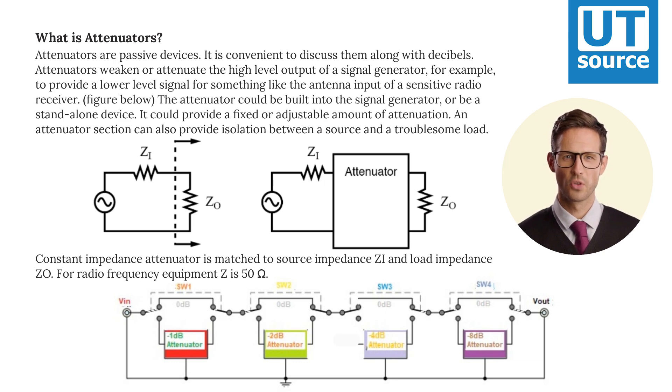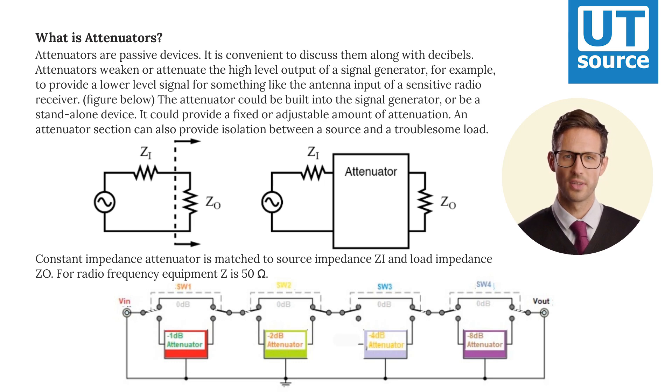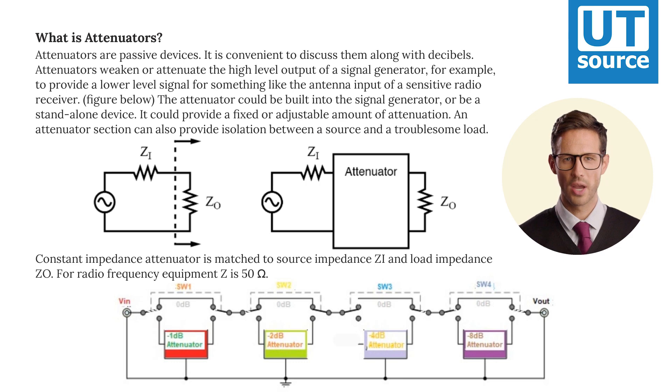A constant impedance attenuator is matched to source impedance ZI and load impedance ZO. For radio frequency equipment, Z is 50 ohms.